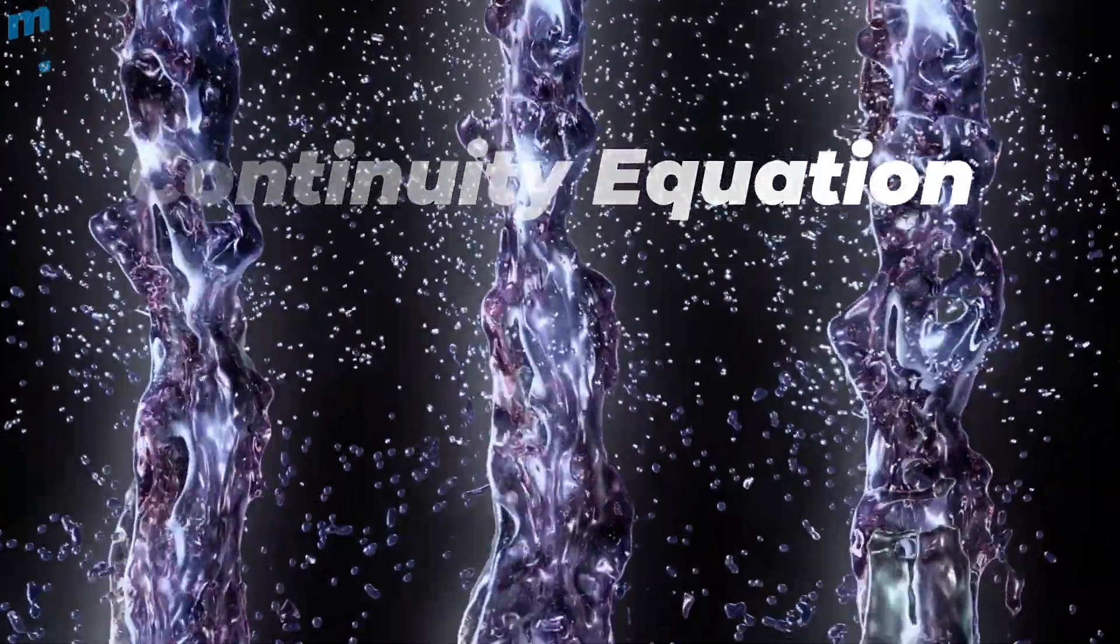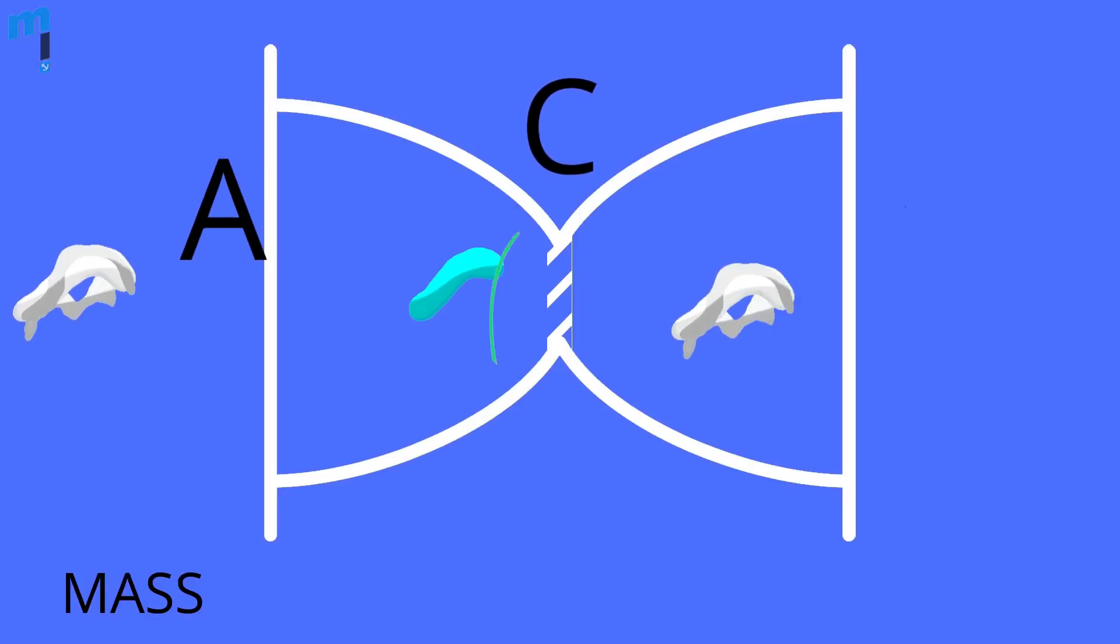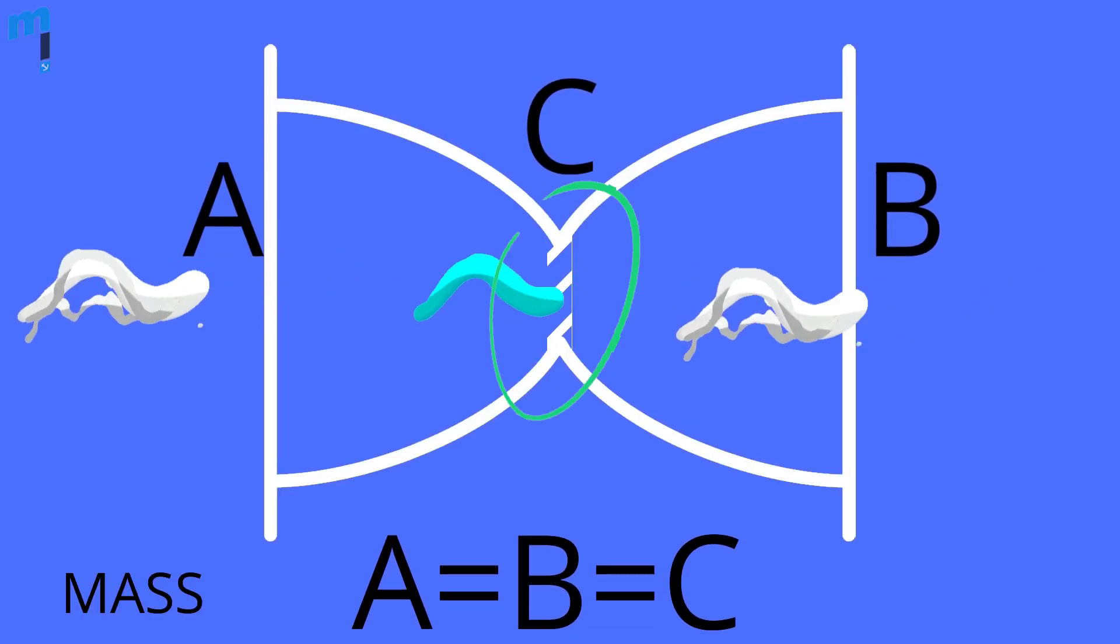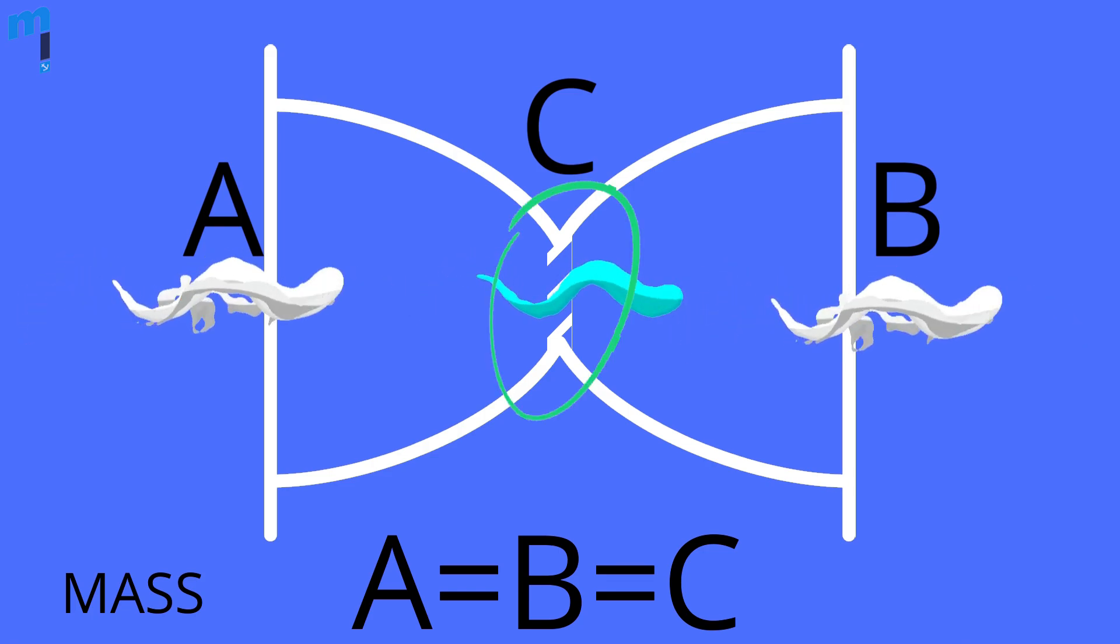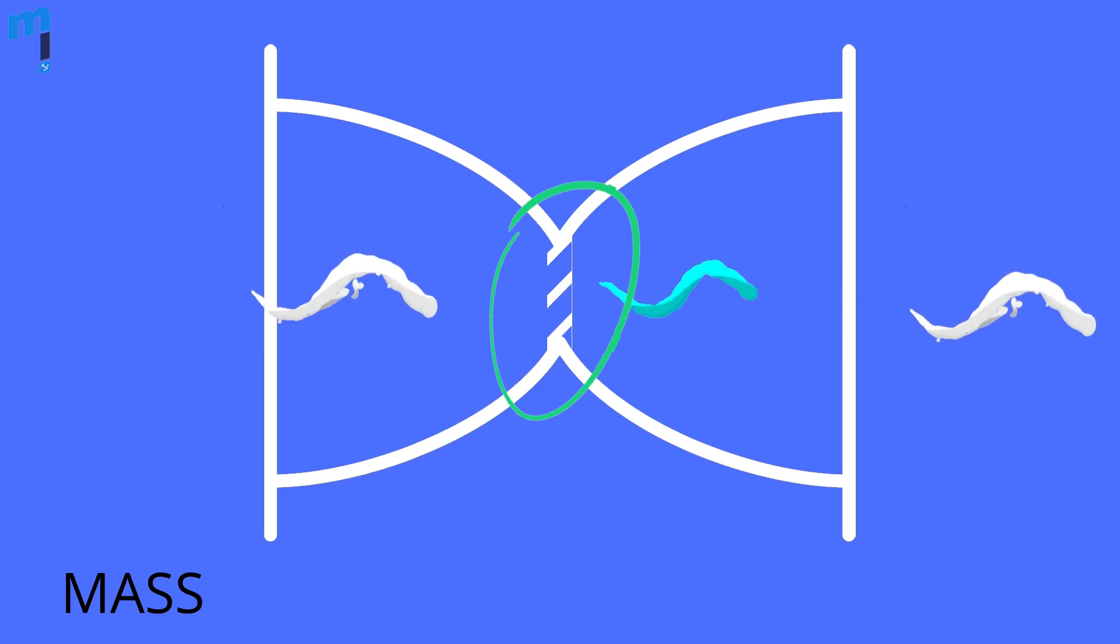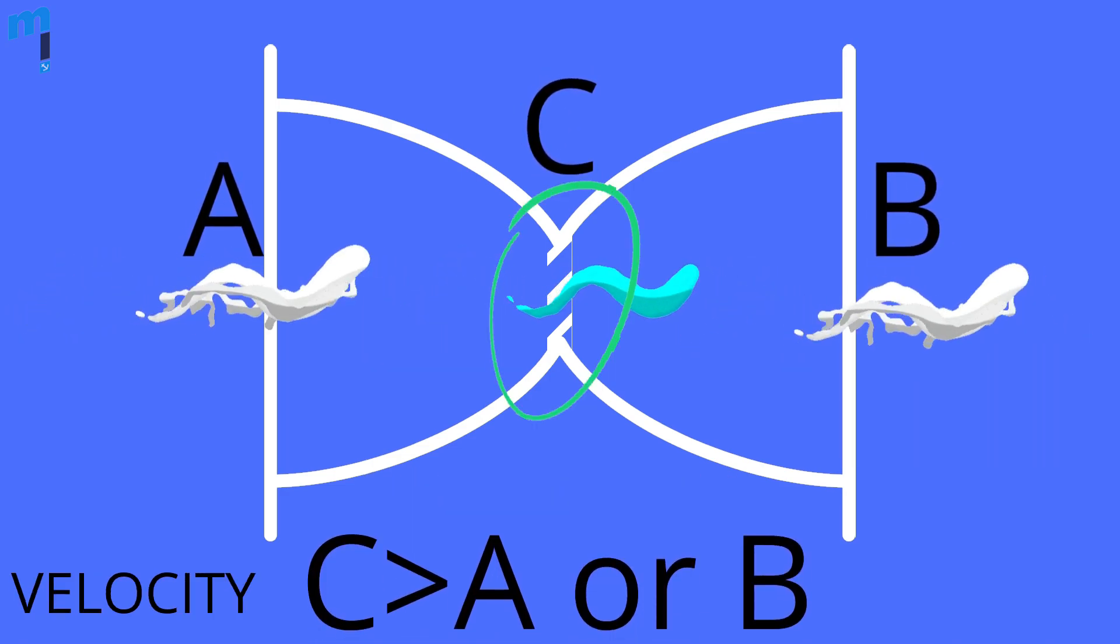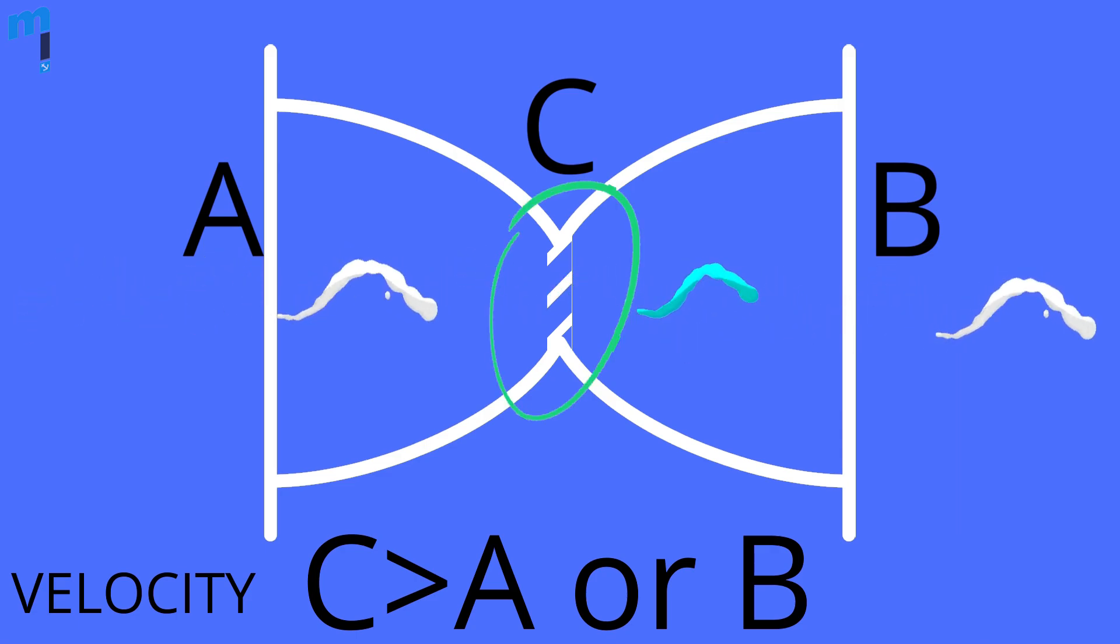This means that in a continuous flow of fluid the mass of the fluid passing through the cross section at point A will be equal to that passing through point C or B. To make this happen, the rate of flow of water at constricted point C must be more than that at A or B. This also means that the velocity of flow at the constricted point is always greater so as to satisfy the continuity equation.